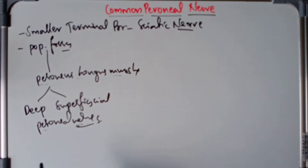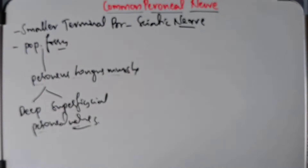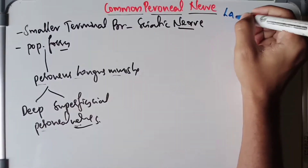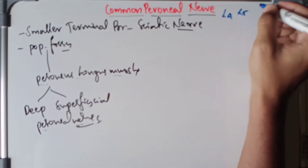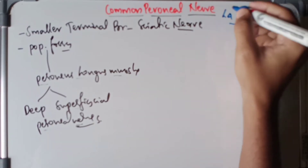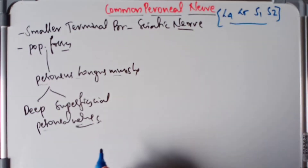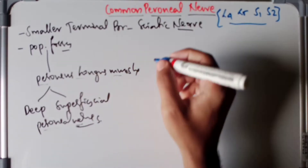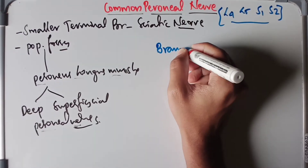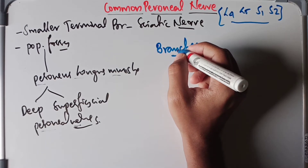The root value of the common peroneal nerve is from L4, L5, S1, and S2. Now let's discuss about the branches of the common peroneal nerve.